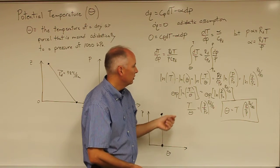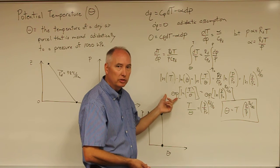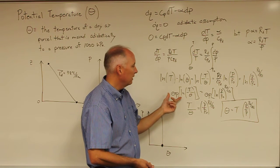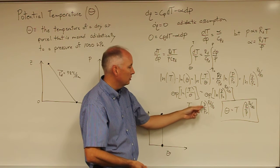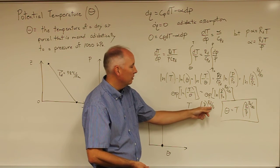So now, in order to solve for theta, we need to take the exponential of both sides, at which you'll end up with T over theta is equal to P over P0 to R sub D over C sub PD.